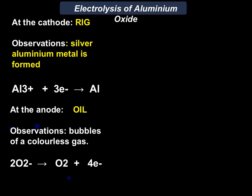Now we go to the cathode and consider what's happening. The observation is that silver aluminium metal is formed at the cathode. The half-equation shows an aluminium ion — Al³⁺ — gaining 3 electrons to form an atom of aluminium metal. Remember OIL RIG: at the cathode we always have reduction happening, because the aluminium ions are gaining electrons and being reduced to form the aluminium metal.